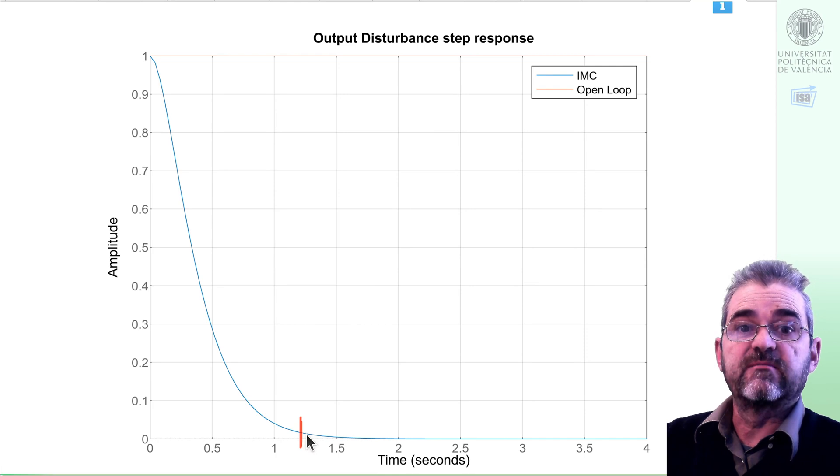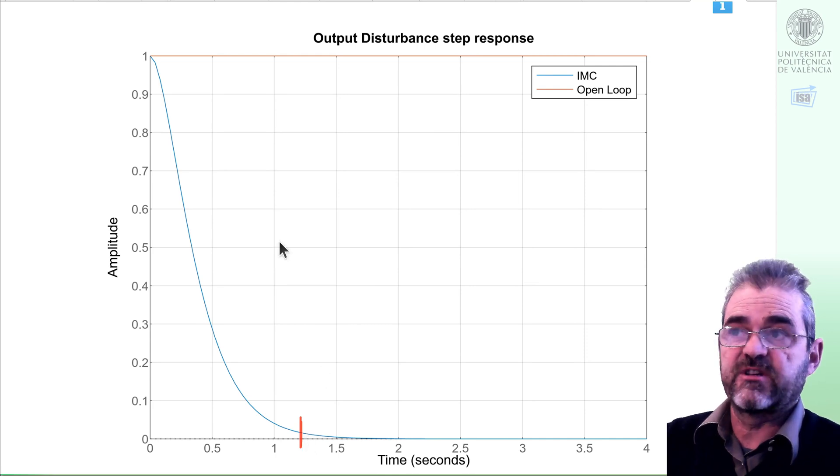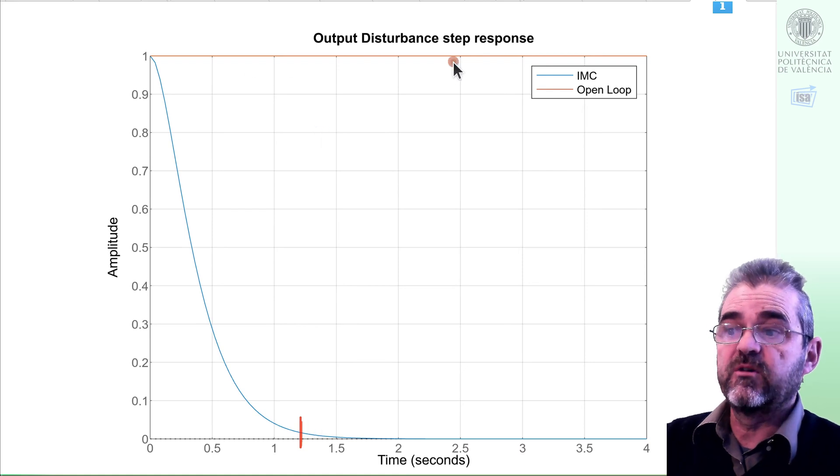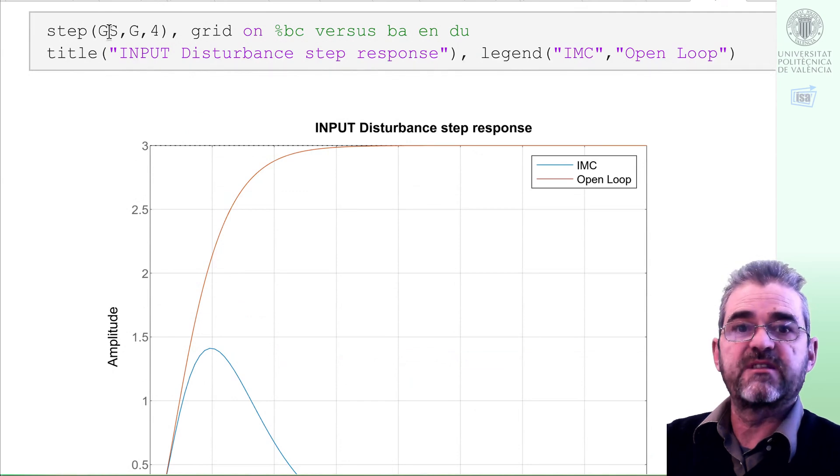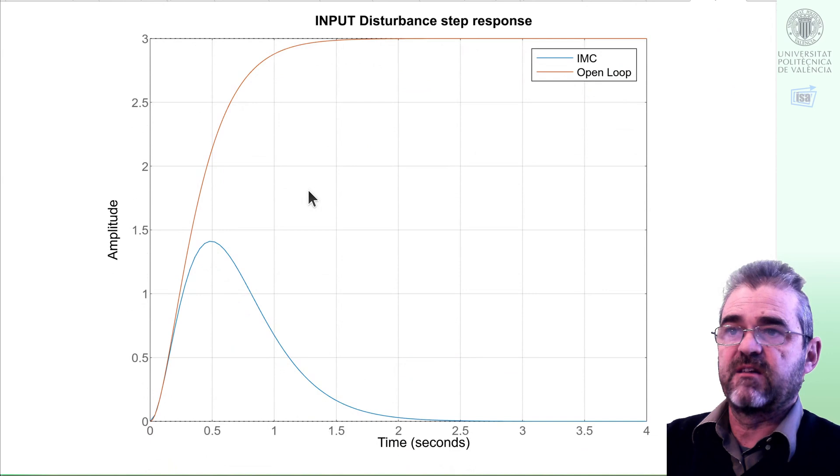So output disturbances will be cancelled to 0 error with this feedback controller IMC. And of course, if I were doing open loop control—if I have no sensor—then output disturbances would never be cancelled. So this is the difference between closed loop IMC, integral action, 0 error, and open loop.